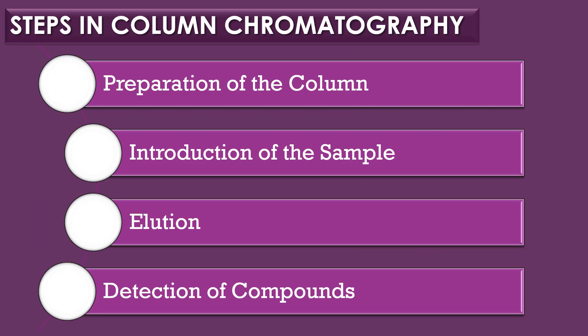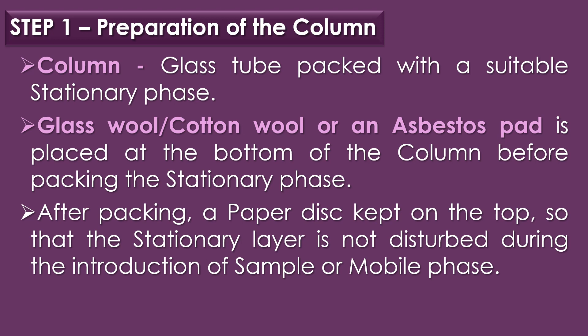There are four steps in column chromatography: Step 1 is preparation of the column, Step 2 is introduction of the sample, Step 3 is elution, and Step 4 is detection of compounds. The first step is preparation of the column. The column mostly consists of a glass tube packed with a suitable stationary phase.